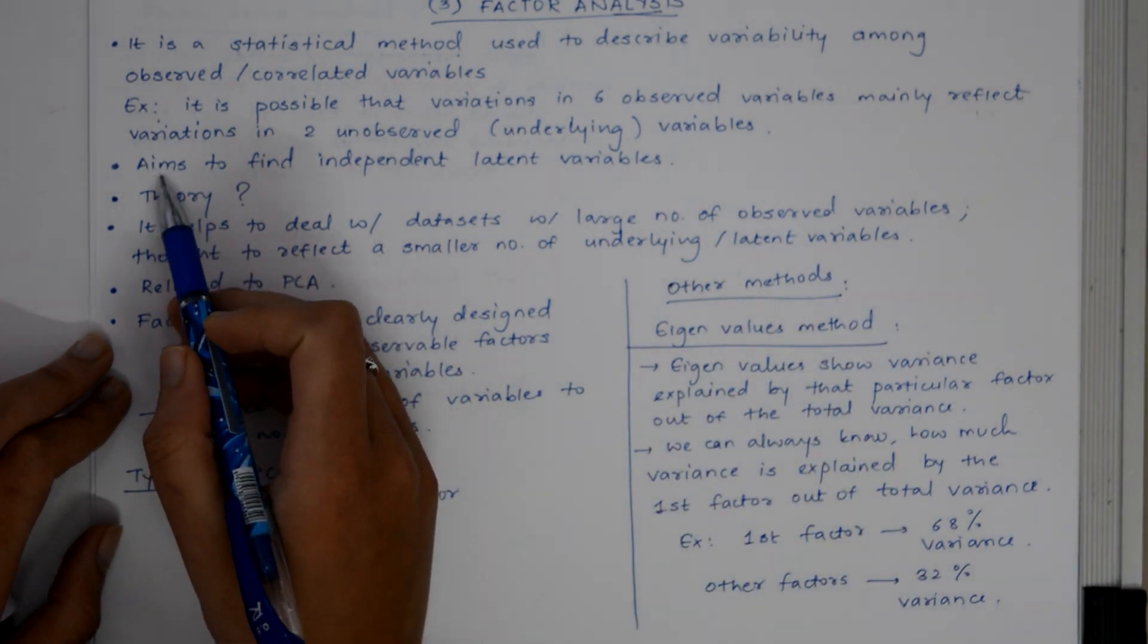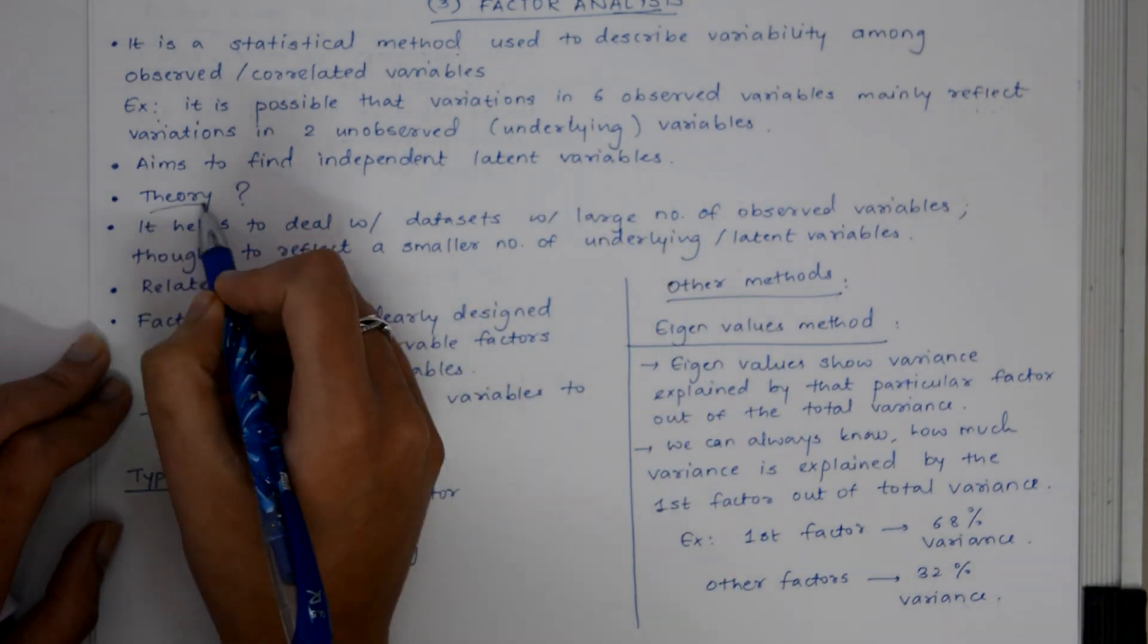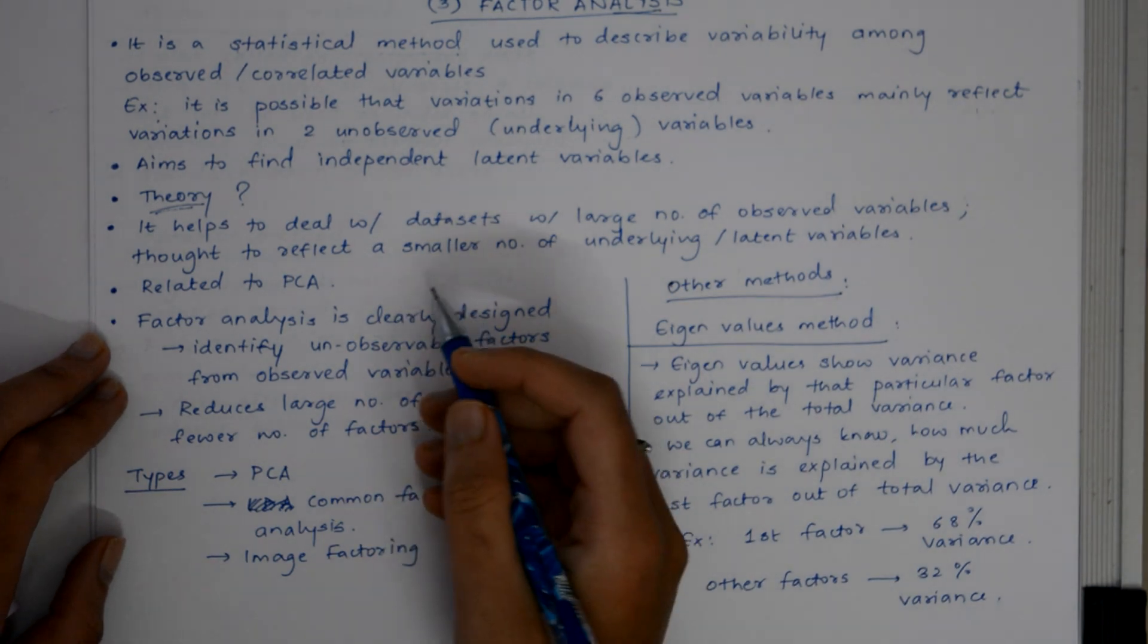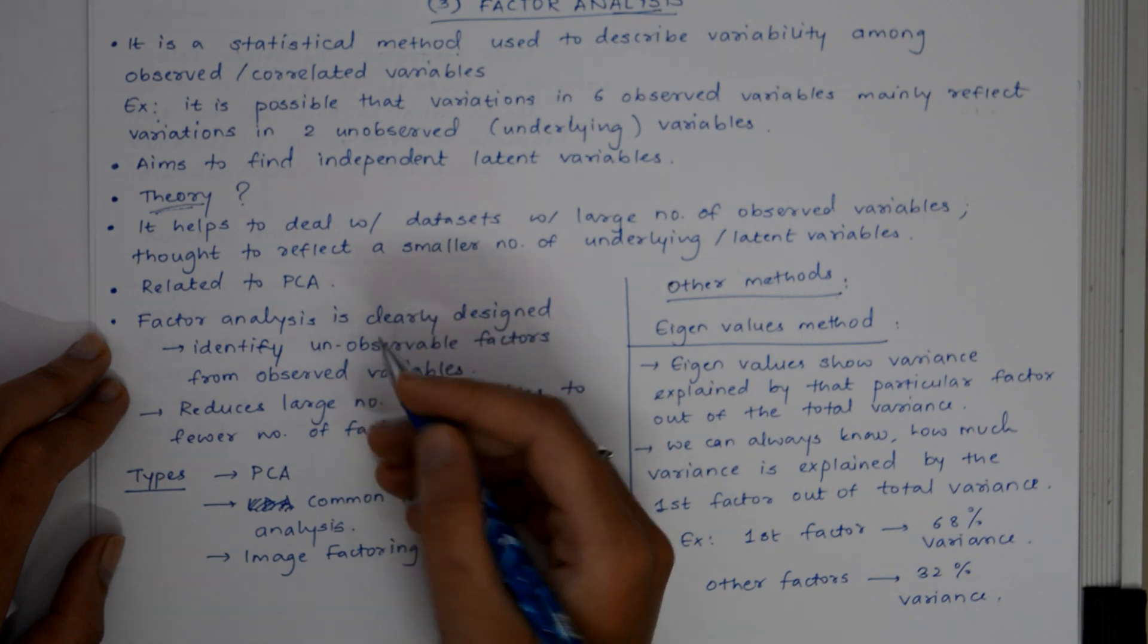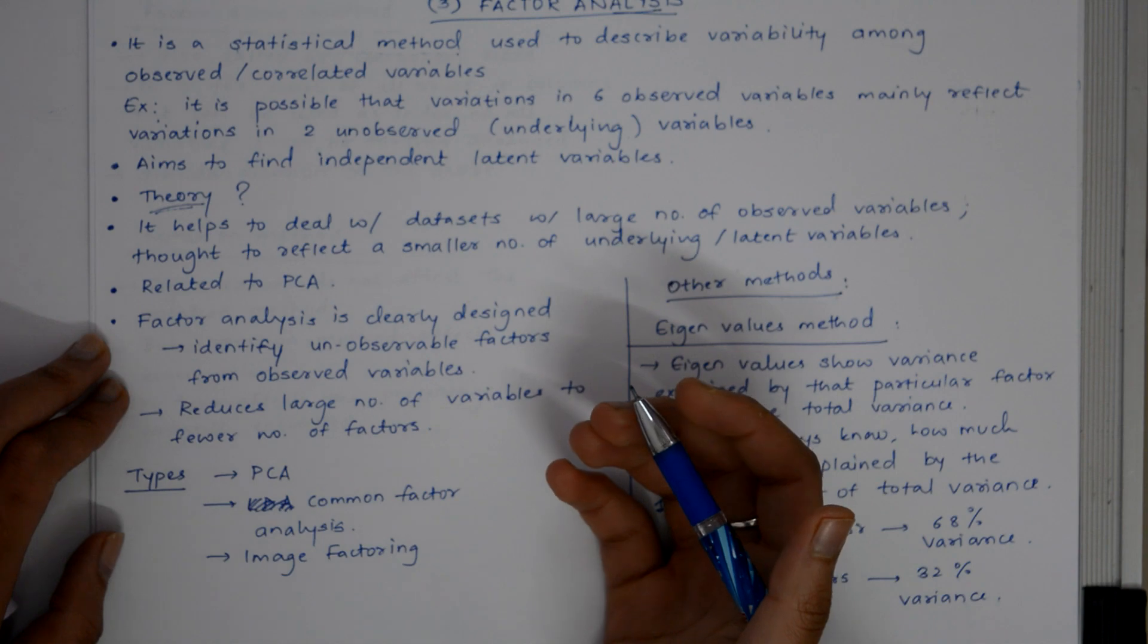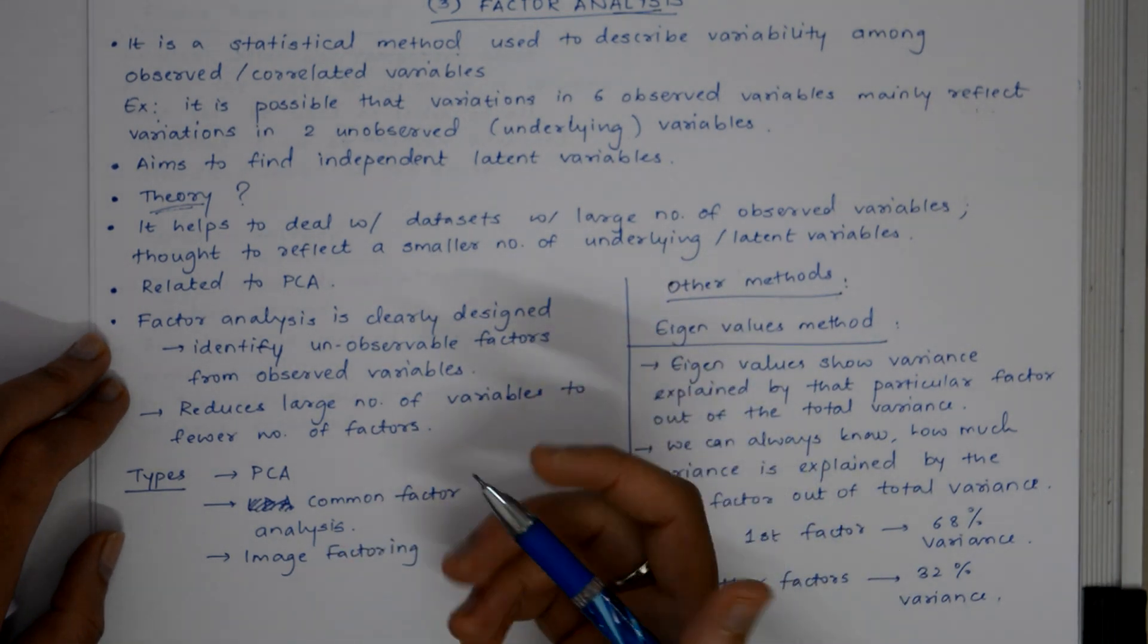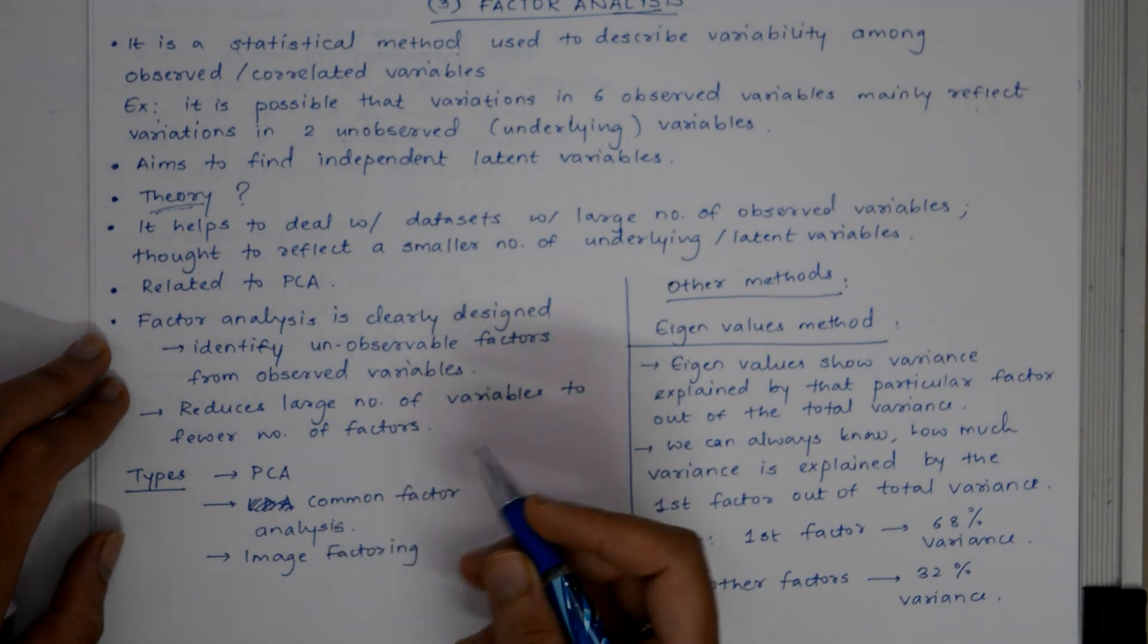Factor analysis aims to find independent latent variables. The theory behind factor analysis is that the information gained about the interdependencies between observed variables can later be used to reduce the set of variables in a dataset.